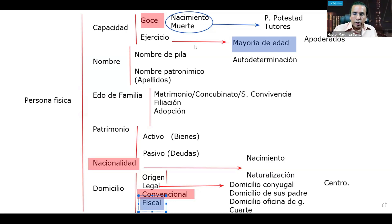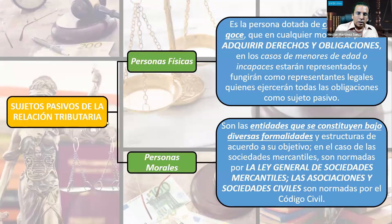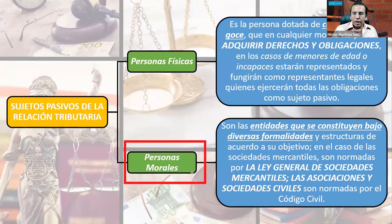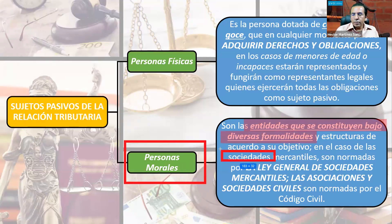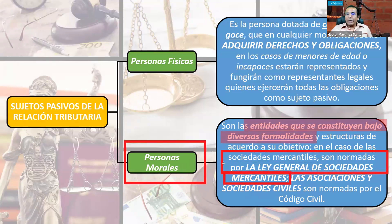Las personas morales son entidades que se constituyen bajo diversas formalidades que establece la ley. Cumplen con los acuerdos para su creación como sociedades mercantiles reguladas por la Ley General de Sociedades Mercantiles, o como asociaciones y sociedades civiles reguladas por el Código Civil.